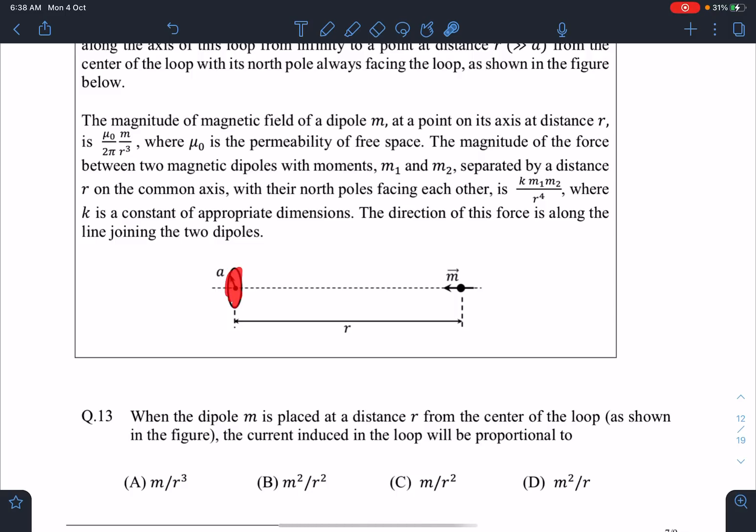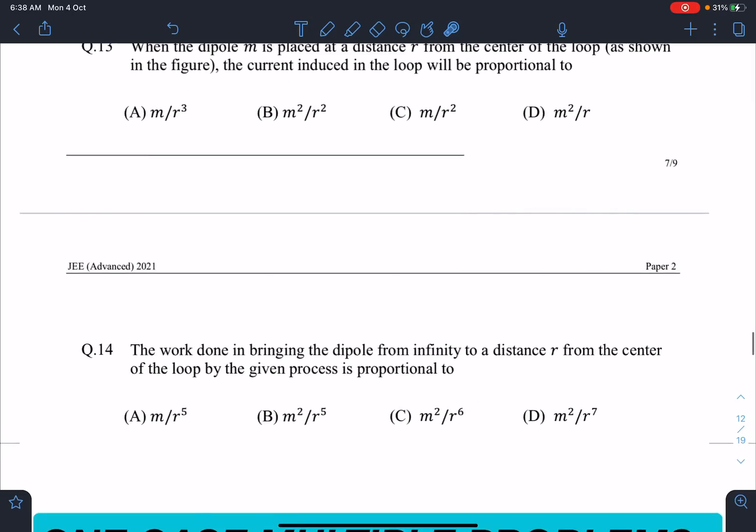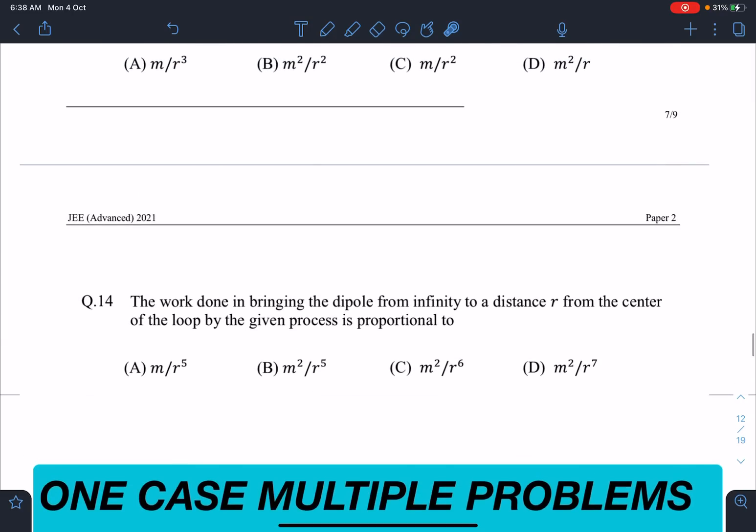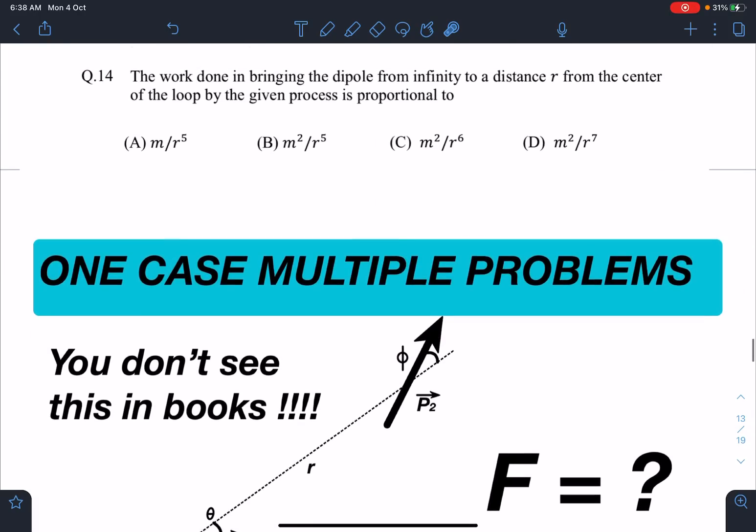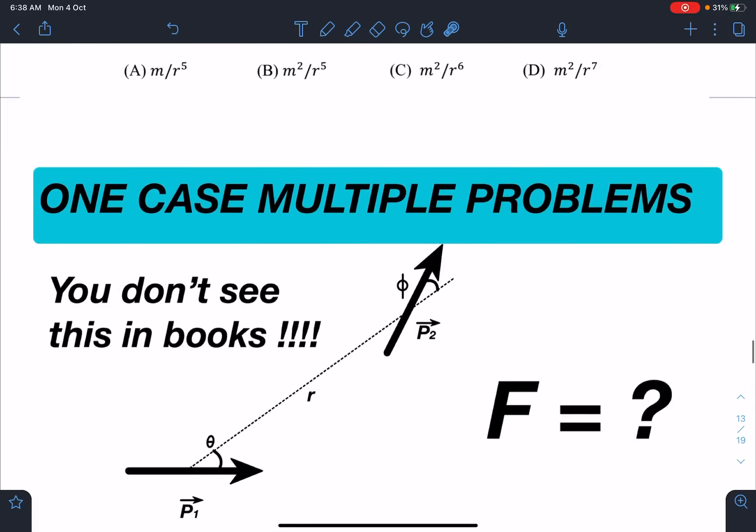They were asking about dipole moving towards the superconducting ring. In one part they are asking the current induced, so flux conservation we can do for this ring and we'll get the answer for first part. The second one is the work done in bringing the dipole from infinity to r. This problem is also having quite good resemblance with the dipole-dipole attraction, but the JEE problem is very light and very simple.